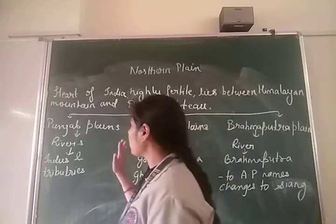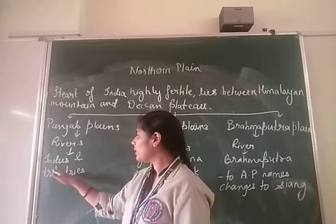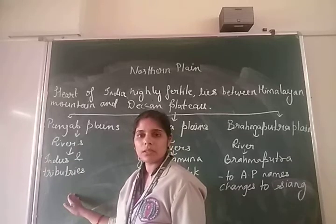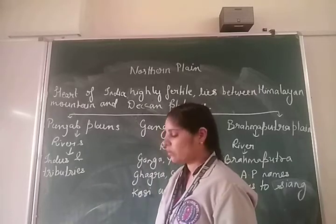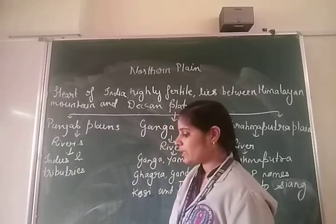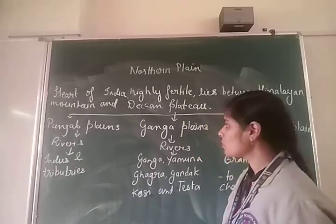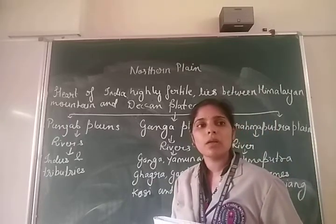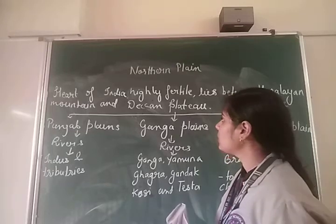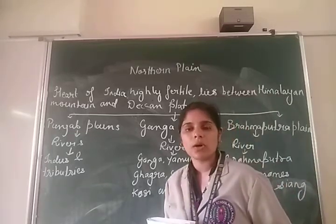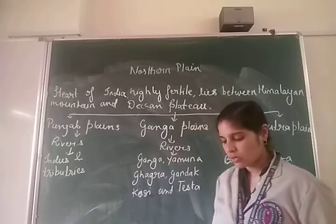Now we are going to talk about the Punjab Plain. Here, the rivers are mainly the Indus and its tributaries. Tributaries means they flow from the Indus river — that is, they divide when they move further. The Punjab Plain is the western part of the Northern Plain, and it is formed by the deposition of new alluvium soil. With this deposition of alluvium soil near the river bank, it is called a bed.